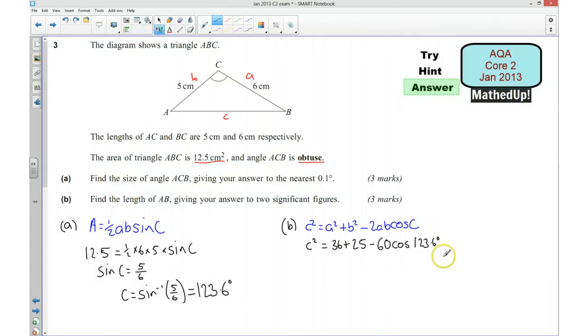Okay, so I'm going to plug this into my calculator but I'm actually going to use the answer that's stored in my calculator already for this. So that's going to give me 36 plus 25 take away 60 cos. And that gives me 94.166, and so I need to square root that now. This is a common thing that people forget to do. Okay, so when you get to this stage make sure that you square root that.